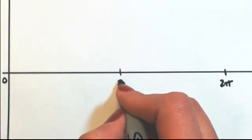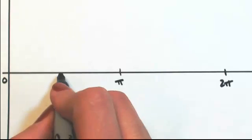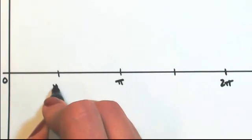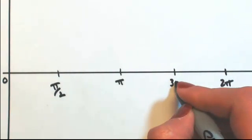So then half of that would be pi. And then the other halves are pi over 2 and 3pi over 2.